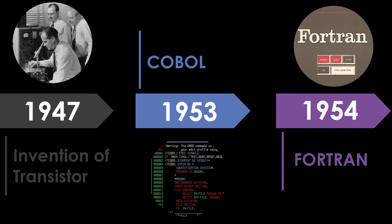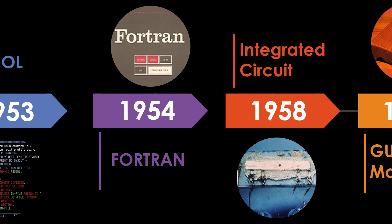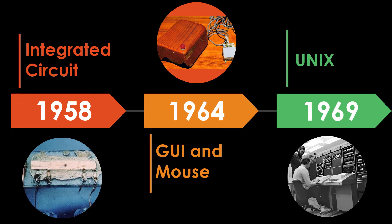In 1954, Fortran is developed by a team of programmers at IBM led by John Backus. In 1958, Jack Kilby and Robert Noyce unveiled the integrated circuit, known as the computer chip. In 1964, Douglas Engelbart shows a prototype of the modern computer with a mouse and graphical user interface.